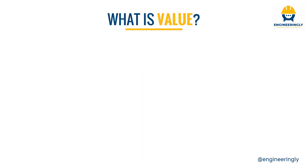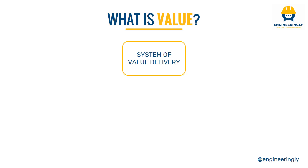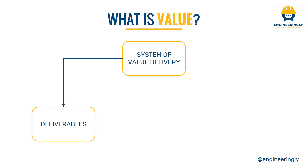In the next slide we will see how value is created. We have a system of value delivery which creates deliverables. As stated in PMBoK 6, a project is a temporary endeavor which creates a unique product, result, or service. That specific unique product, service, or result is called the deliverable. We create a deliverable and deliver it to the customer, the end user, or whoever the stakeholder is on that end of our project.